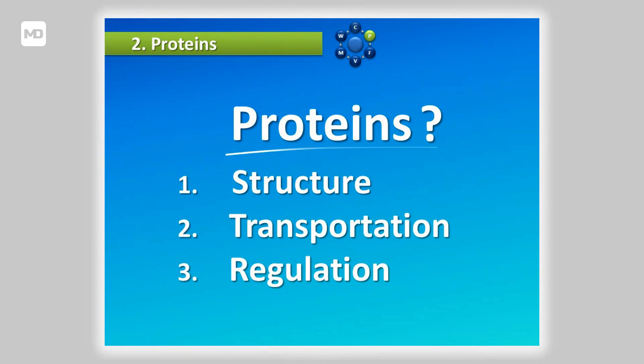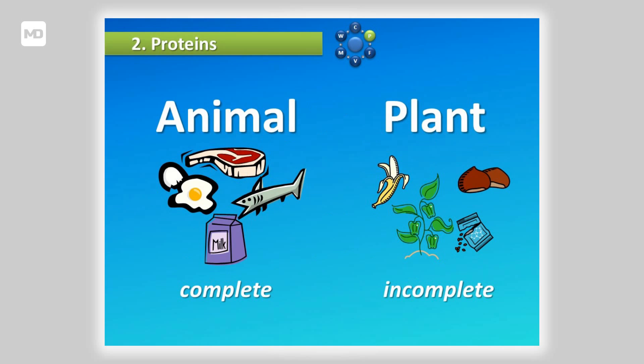So what are good sources of protein? There are basically two different sources. On the one hand, we've got animal proteins, which can be found in red meat, chicken, eggs, fish, and dairy products. These are also called complete proteins because they consist of mostly all the building blocks, or amino acids, of a protein. On the other hand, we have plant-based proteins, which can be found in fruits, vegetables, nuts, seeds, and beans. These are referred to as incomplete proteins because they don't have all the essential amino acids our body needs. That's why if you are a vegetarian or a vegan, you have to make sure to get enough proteins in your diet.